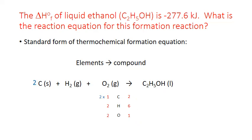Let's start with carbon: I have two in my final product, so I put a two coefficient in front of solid carbon. Hydrogen: I have six total on the product side, so I put a three coefficient in front of my H2. And oxygen: I only need one, since I only have one in the final product, so I put a one half coefficient in front of my O2. And now everything is balanced.